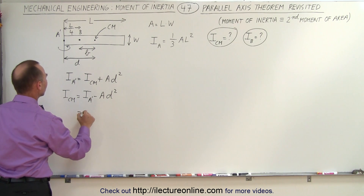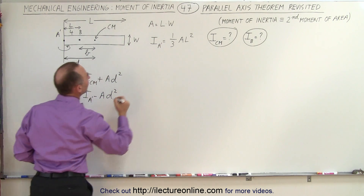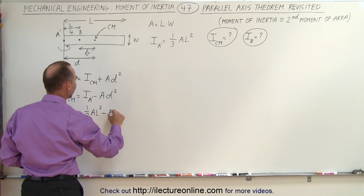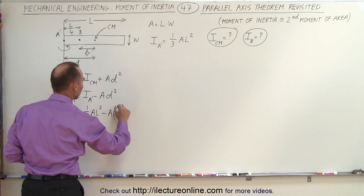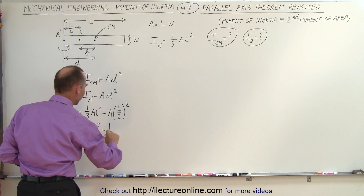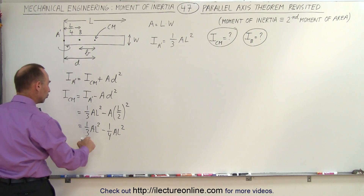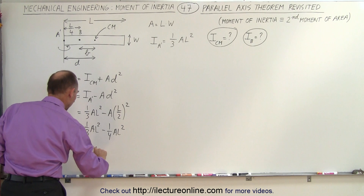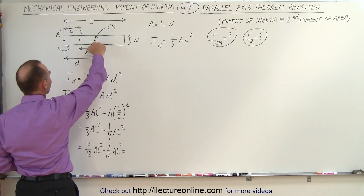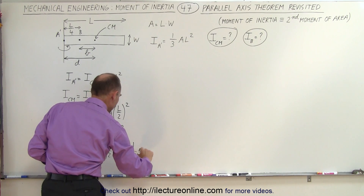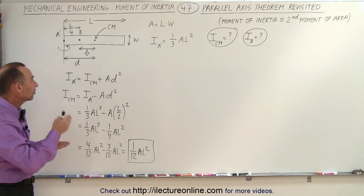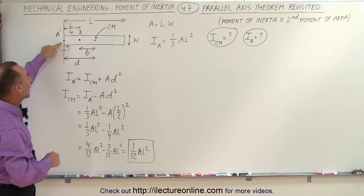Plugging in values: ICM equals one-third AL squared minus the area times D squared, where D is L over 2, so (L/2) squared. This becomes one-third AL squared minus one-fourth AL squared. The common denominator is 12, giving 4/12 AL squared minus 3/12 AL squared, so the moment of inertia at the center of mass equals 1/12 AL squared — or 1/12 ML squared if we know the mass.